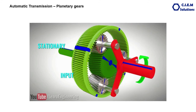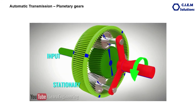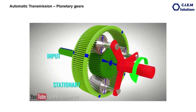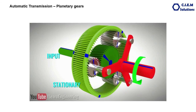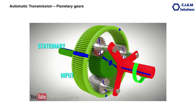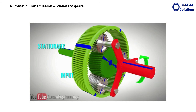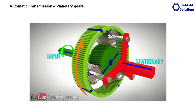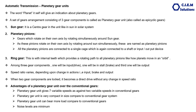You can see this animation showing stationary input and output variations. Here the input is the sun and the ring is stationary — this is the output. Then the input is the ring and the sun is stationary. You can see these variation animations. Please go through the two pages of notes. If you have any queries or questions, you can always contact me through email.